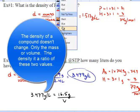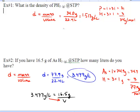So we can swap these and we get volume equals 16.5 grams over 3.477 grams per liter. Our grams cancel out and we're left with, after we calculate this, 4.74 liters of AsH3.